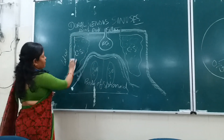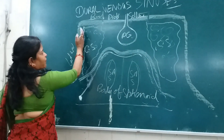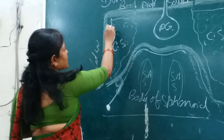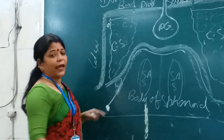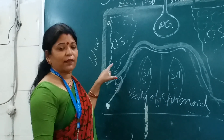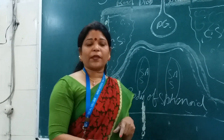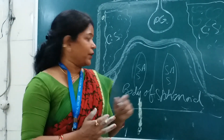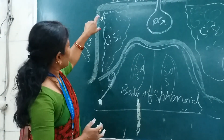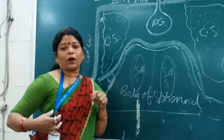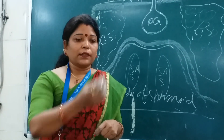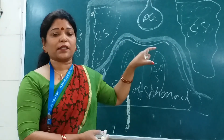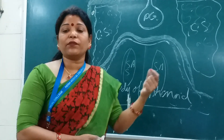This is the lateral wall of the cavernous sinus. The space between the lateral wall and the meningeal layer - this is known as the lateral wall of the cavernous sinus. I am explaining the internal relations of the cavernous sinus. There are four structures in the lateral wall, from above downwards. In viva or MCQ, you may be asked to enumerate the structures present in the lateral wall of the cavernous sinus from above downwards.